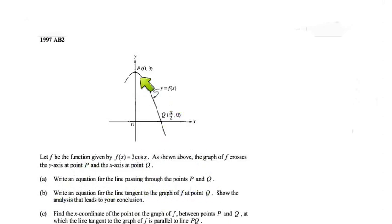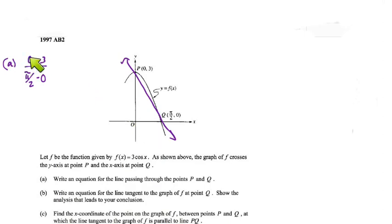Part A: write an equation for the line passing through points P and Q. This isn't even calculus — we just need to find the slope and one point to write the equation of the line. For the slope, I take the y-values: zero minus three on top, and the x-values: pi over two minus zero on the bottom. Make sure you stay consistent — zero and pi over two should be from the same point, and three and zero from the same point.